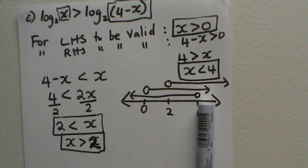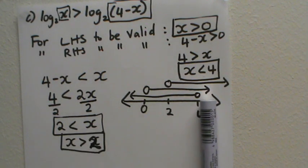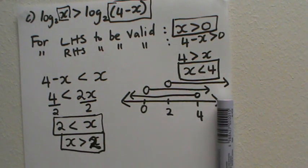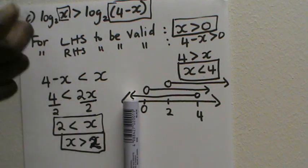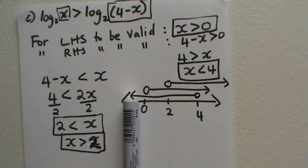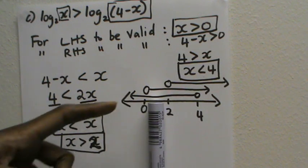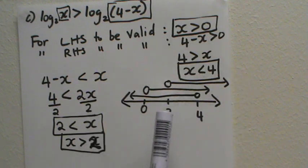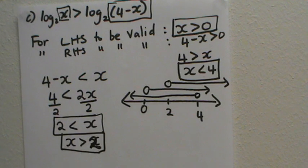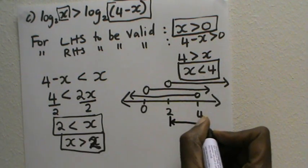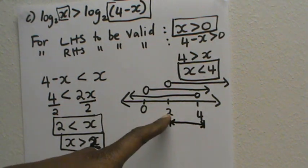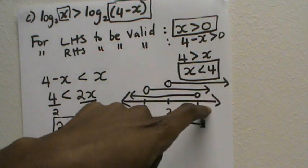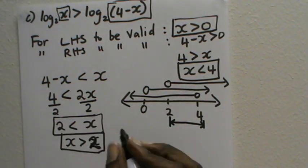To combine all three conditions, I look for the region on the number line that has all three lines above it. If I stand way to the left, only one line is above me — not good enough. If I stand between zero and two, only two lines are above me — still not enough. The only place where all three lines are above me is the region between two and four. I cannot stand at two or four because both have open circles.